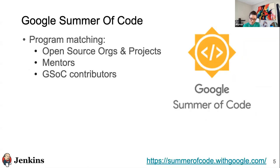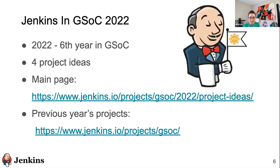So what is Google Summer of Code? Google Summer of Code is a global online program focused on bringing new contributors into the open source software development space. GSOC contributors work with an open source organization — in this case, Jenkins — and spend about 12 plus weeks programming projects under the guidance of mentors. This is our sixth year participating in GSOC, and we have four project ideas.